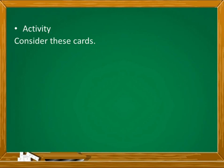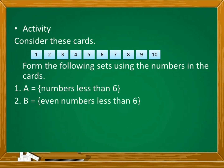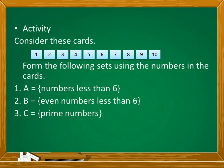For your first activity, consider this set of cards numbered 1 to 10. What you need to do is to form the following sets using the numbers in the cards. Number 1, A is equal to a set of numbers less than 6. Number 2, B is equal to a set of even numbers less than 6. Number 3, C is equal to a set of prime numbers. And number 4, D is equal to a set of numbers from 1 to 5. Again, these 4 sets that you're going to form will be from the set of cards numbered 1 to 10.